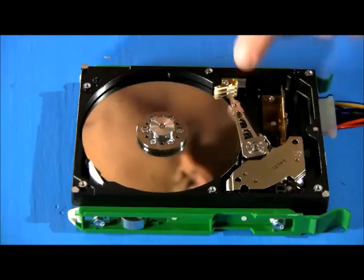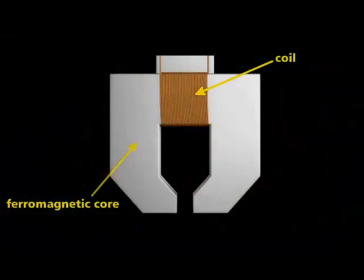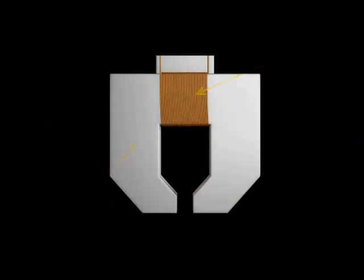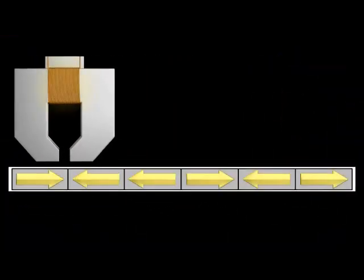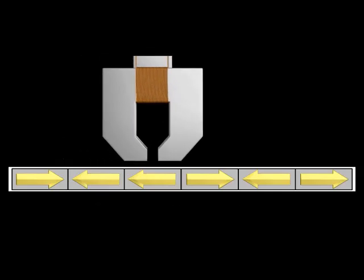At the end of the arm lies the most critical component, the head. At its simplest, it's a piece of ferromagnetic material wrapped with wire. As it passes over the magnetized sections of the platter, it measures changes in the direction of the magnetic poles.